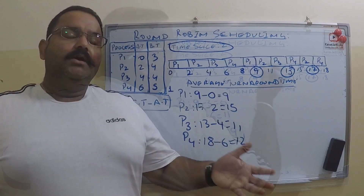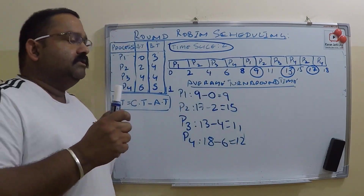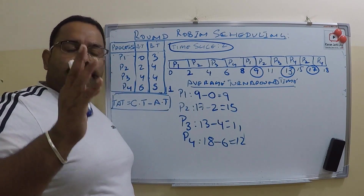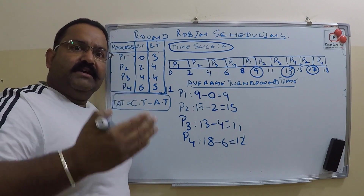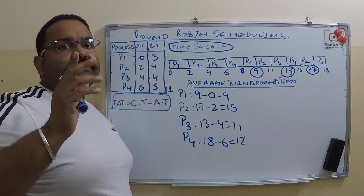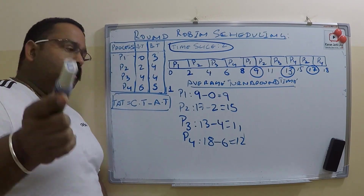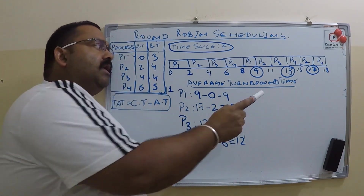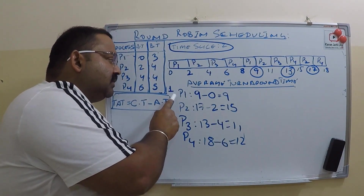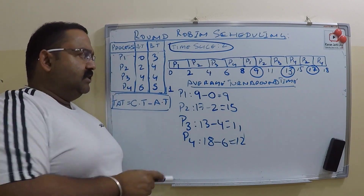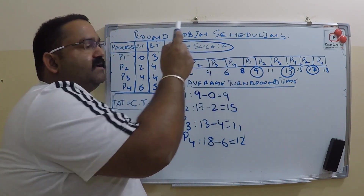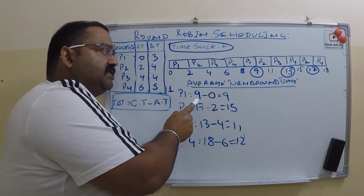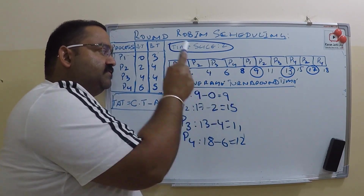Turnaround time is the time a process takes to complete its execution after it has been submitted to the CPU. The formula is: Turnaround Time = Completion Time − Arrival Time. For P1: it finished at time 9 and arrived at time 0, so turnaround time = 9 − 0 = 9.